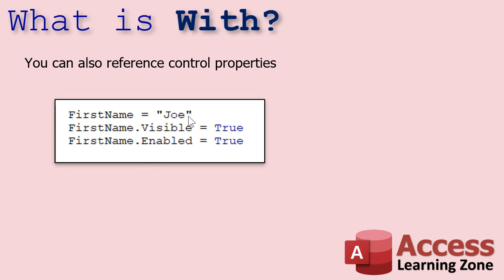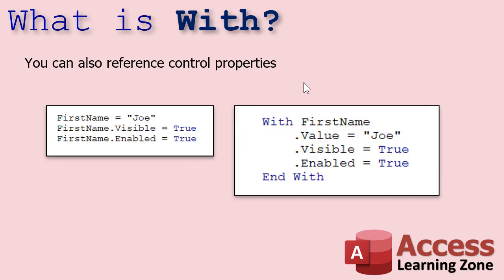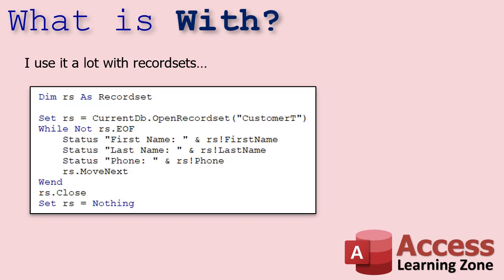It's also handy if you want to reference control properties. Let's say the FirstName control — you want to set its value equal to Joe and then change a bunch of property values like Visible is True, Enabled is True, Locked is False. With the With keyword, you can say dot Value equals Joe, dot Visible equals True, dot Enabled equals True, and so on, and then End With — and all of that applies to the FirstName control.